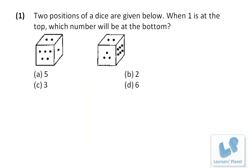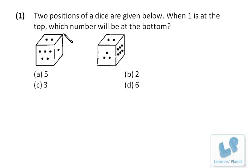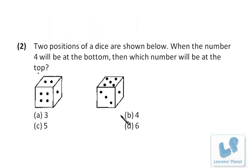Let's begin. This problem: two positions of a dice are given; when 1 is at the top, which number will be at the bottom? We have to find the number opposite to 1. In both positions 2 is at the top, which means the dice has taken a 180-degree rotation. So opposite to 5 is 3, and opposite to 1 is 6. When 1 is at the top, the number at the bottom is 6.